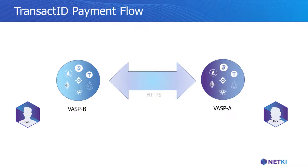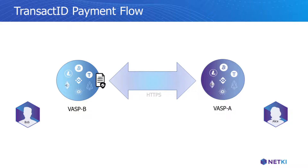VASP A signs the opening of the connection with its own identity certificate. VASP B examines the certificate to determine if VASP A is a party they wish to share their and Bob's PII with. For GDPR purposes, VASP B can optionally share VASP A's identity data with Bob and allow Bob to choose if he is willing to share his data with VASP A.